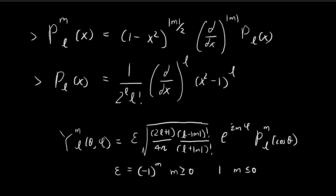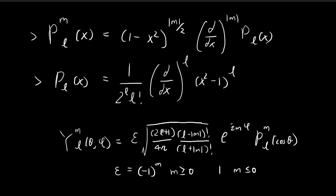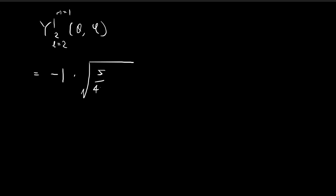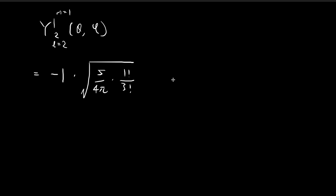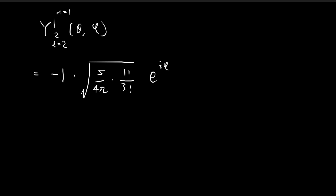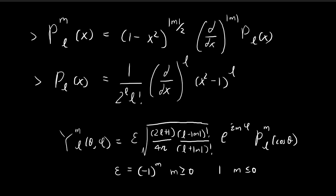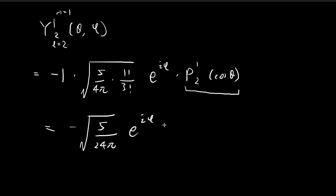Starting with -1, for the constant we substitute l=2, giving 2l+1 = 5, so we have 5 over 4π. For the factorials, we have (l−m)! = (2−1)! = 1! and (l+m)! = (2+1)! = 3! = 6. So we have 1! divided by 3!. The exponential term is e^(iφ) since m=1. Simplifying, we get the square root of 5 over 24π times e^(iφ) times P₂¹(cosθ).